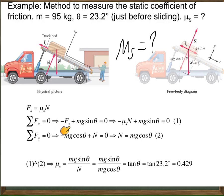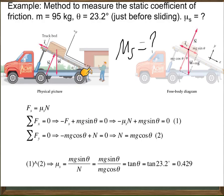On the other hand, we have the component of the weight in the horizontal direction, which is mg sine theta — we already solved this type of question in previous problems. This is mg sine theta; it is plus because it is in the downward direction, which I have already chosen as the positive x-direction. This equals zero right at the time when the object starts sliding at constant speed.